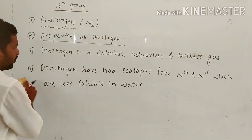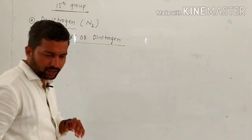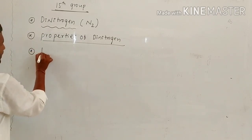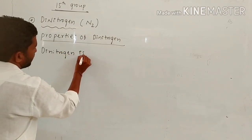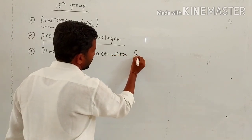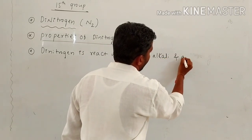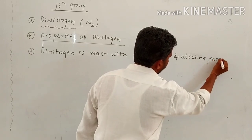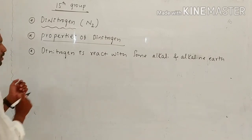The third chemical property: di-nitrogen reacts with some alkali and alkaline earth metals to give their respective nitride products.